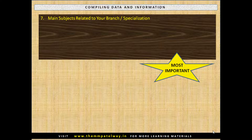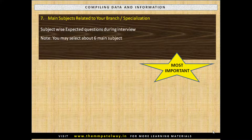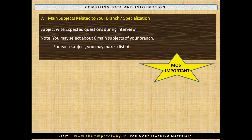Regarding Main Subjects Related to your Branch or Specialization: compile subject-wise expected questions during interview. This is the most important part. You may select about 6 main subjects of your branch, and for each subject make a list of about 50 questions. Keep on referring to these questions again and again.